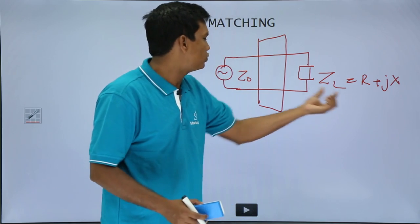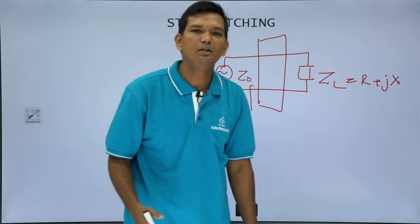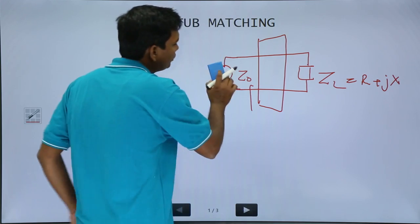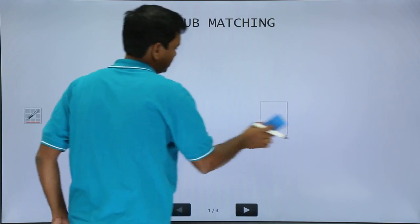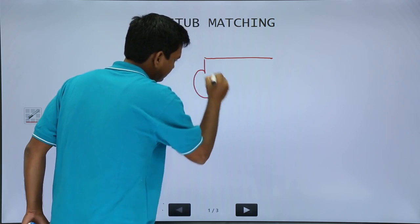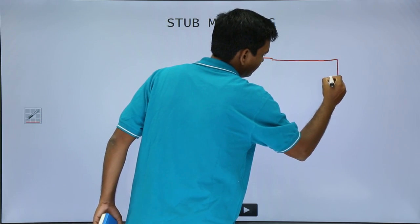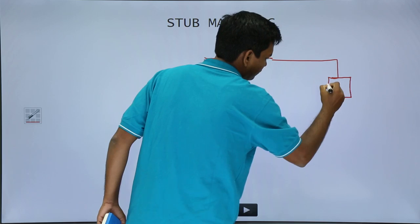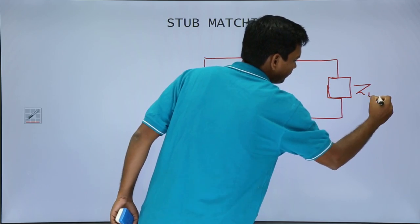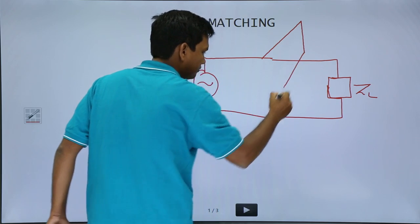My purpose is to match this impedance such that if I look from this point my impedance should be equal to Z₀. So stub matching is nothing but matching the complex impedance. I am going to draw the same circuit in a different fashion. This is my Z₀, and what I am going to do is add a stub here. We will understand what this stub is.